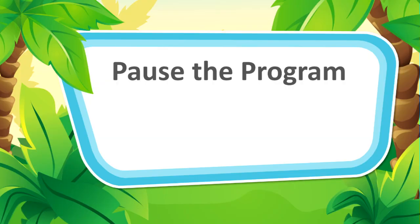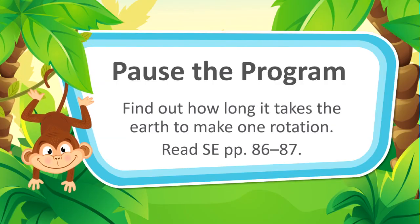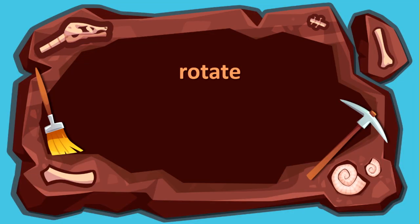In this next section, you'll be seeing the word imaginary. As you read, I want you to find out how long it takes the Earth to make one rotation. So what is one way that the Earth moves in space? Well, it rotates. What does rotate mean? Rotate means to spin or to turn.